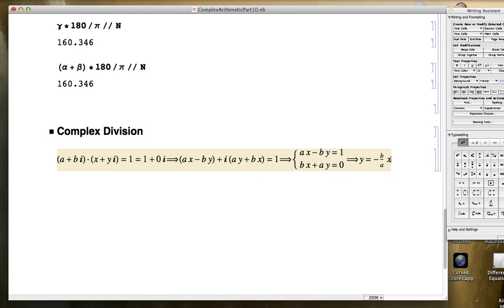That can then be substituted into the first equation. You get ax minus b times negative b over a times x, which will ultimately give you positive b squared over a times x equals 1. You could factor out an x on the left side and then divide by a plus b squared over a. Again, all assuming a is not 0. I should probably add that in here. I'm assuming if a is not 0.